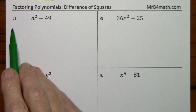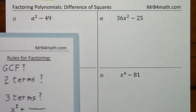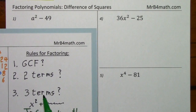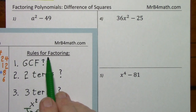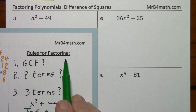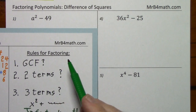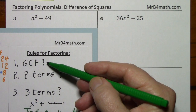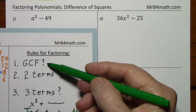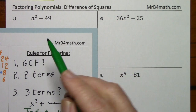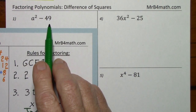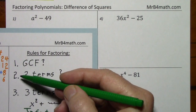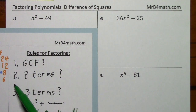Looking at number one, and referring to our trusty rules for factoring, number one on the list is GCF. Do we have a GCF? No GCF other than one. Proceed down the list.